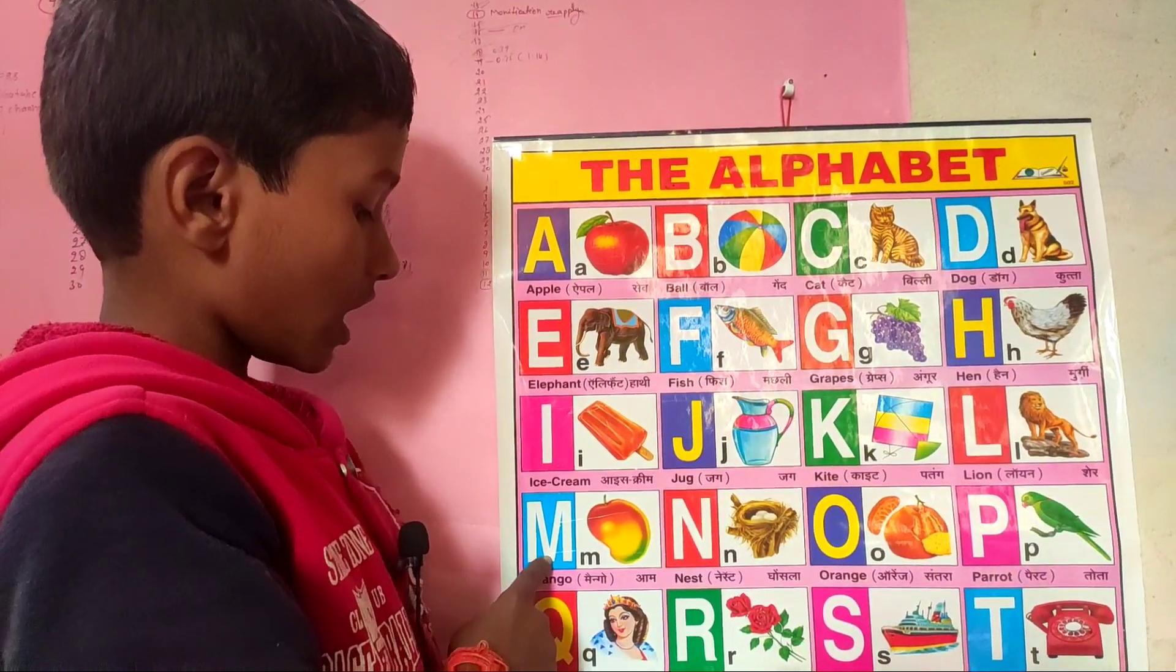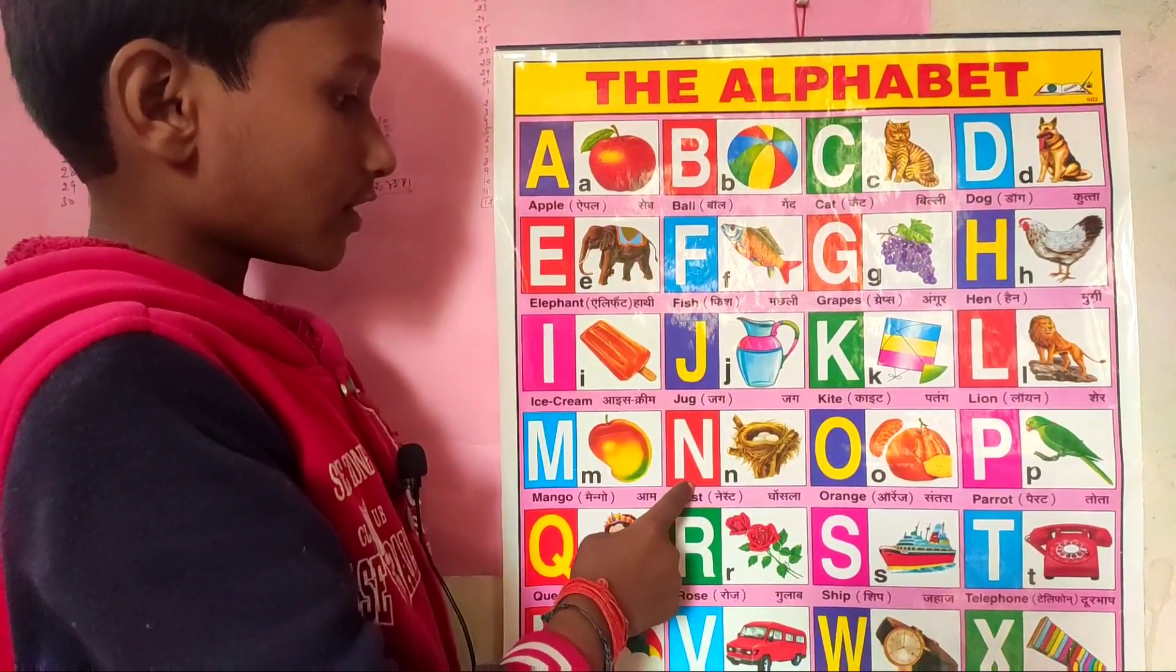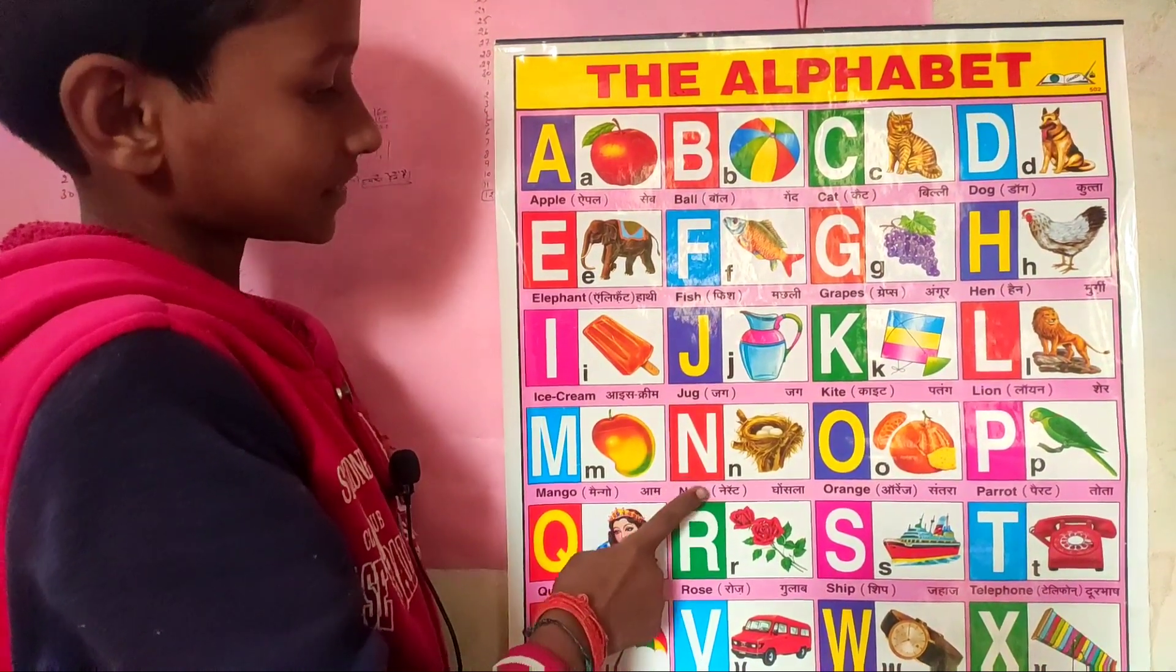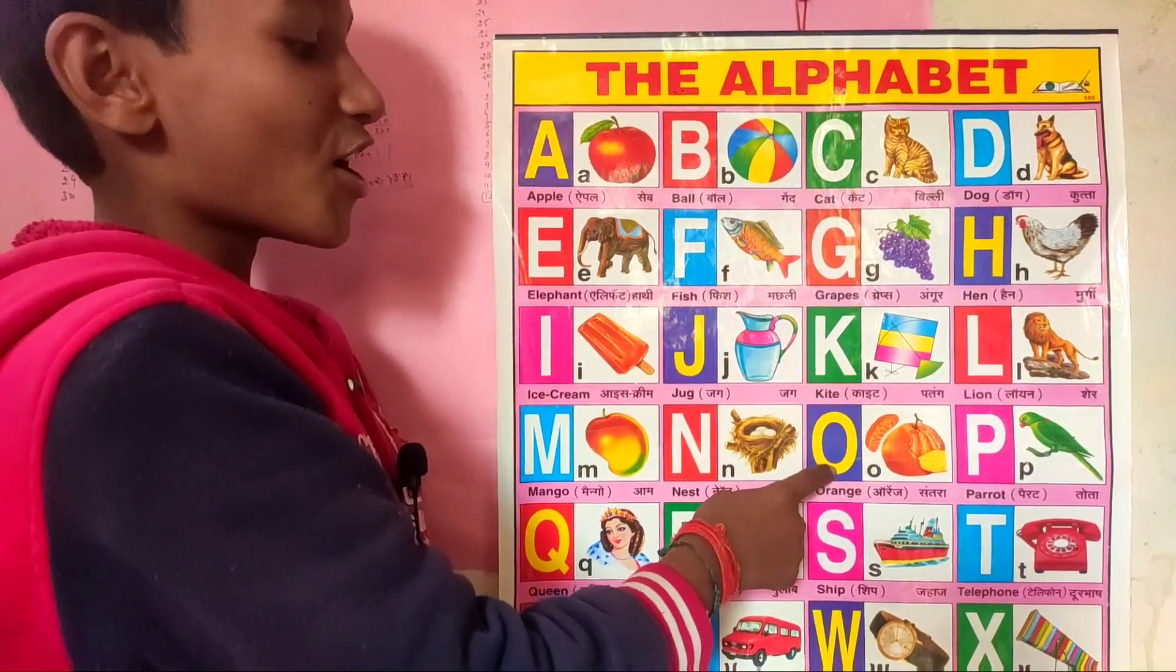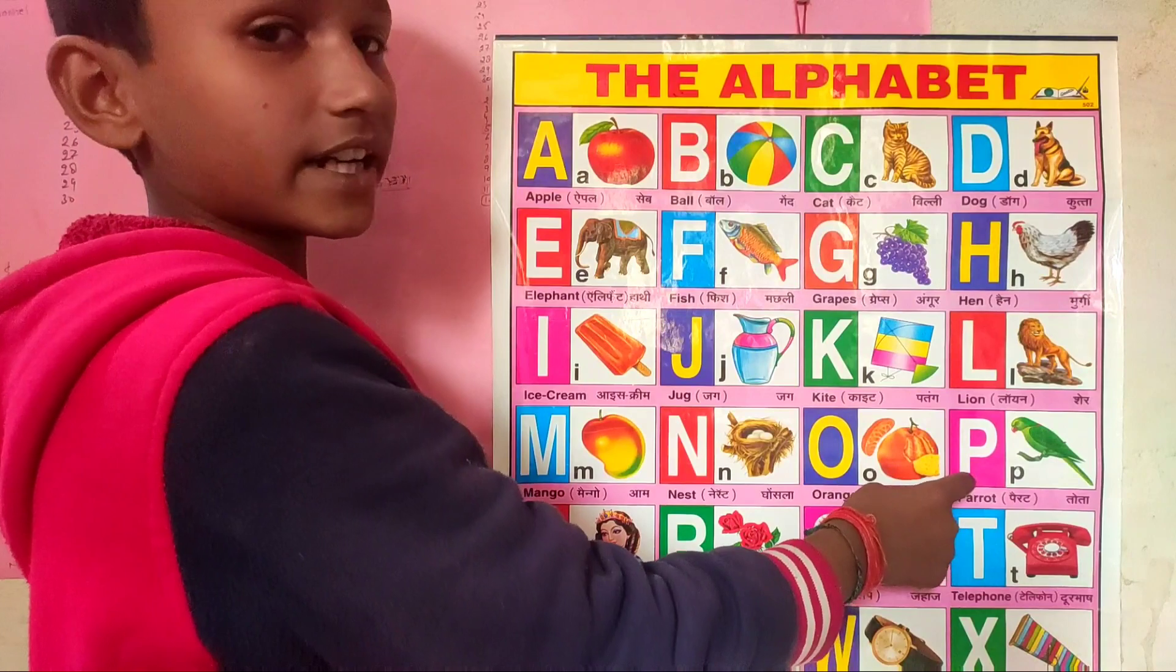M for monkey, N for nest, O for ox, P for parrot.